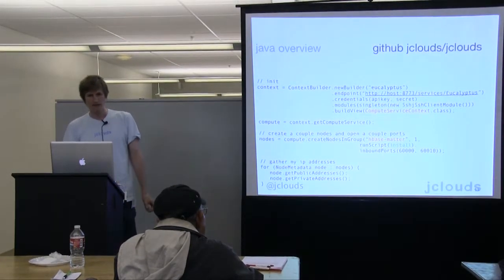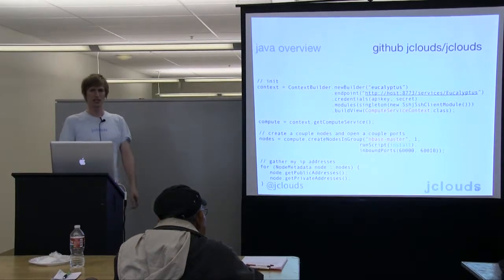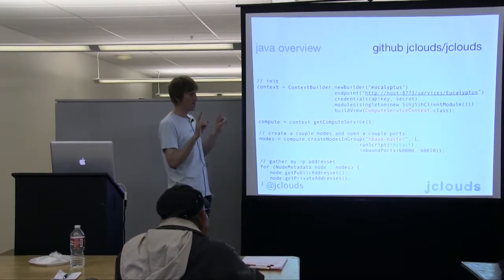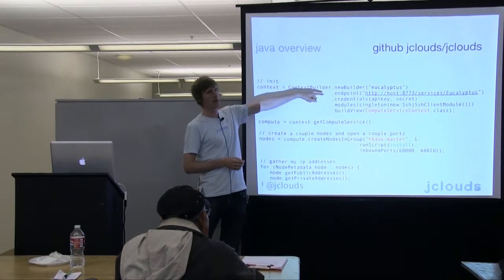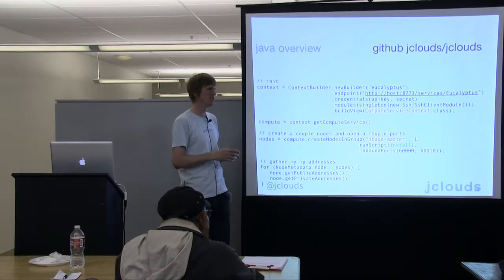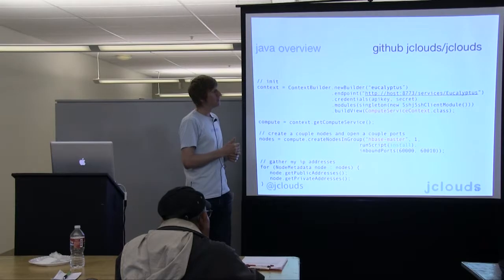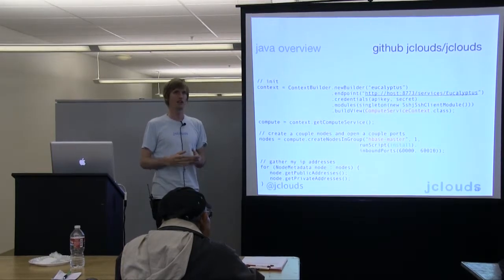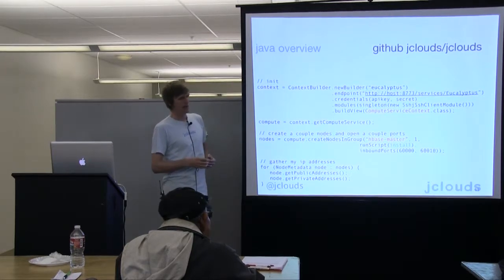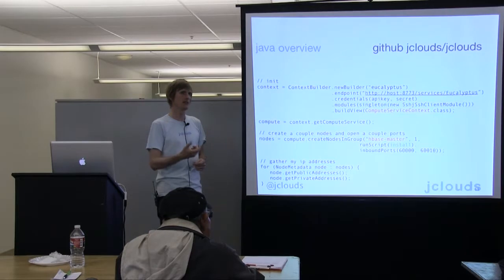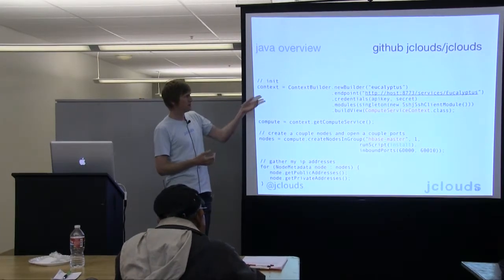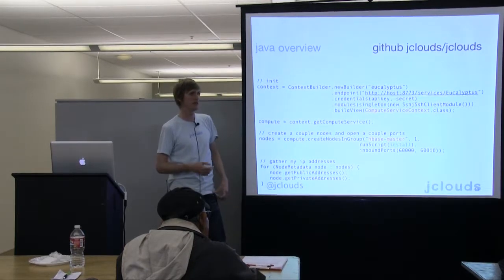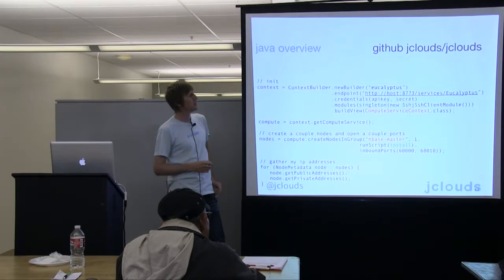The code here is showing a Eucalyptus endpoint. If you're working with the JClouds context and using an API as a provider, you need to also supply the endpoint at minimum — though almost never do you need more properties because we bake in defaults. A blob store doesn't really need an SSH client, so we don't make that a core dependency of JClouds. Whereas a compute service will probably want SSH, so we have ways of passing in your favorite library for those things to keep dependencies minimal.